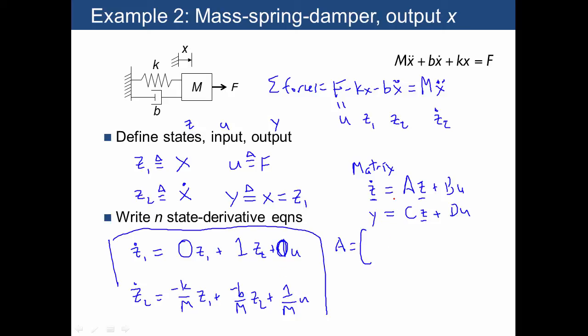So what's our A matrix going to be? If you recall how matrix multiplication works, A times z is going to be written as 0, 1, negative k over m, negative b over m. Where did that come from? Our first row of the A matrix is just going to be the coefficients of z1 and z2: 0 and 1.